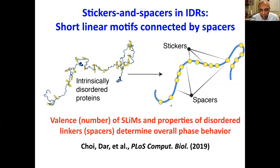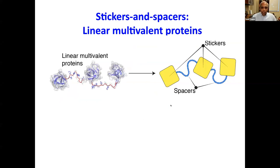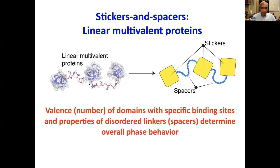And then we have the topic for today's discussion: linear multivalent proteins. Highlighted here are the types of polyvalent systems we encounter in signaling primarily, where you have multiple SH3, SH2, PDZ, PHD, or bromo domains concatenated by disordered linkers. Again, the valence — the number of domains and specifically the number of hotspots or specific binding sites — and the properties of the disordered linkers actually determine the overall phase behavior.